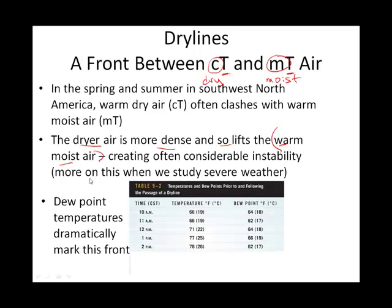You can tell that a dry line has passed by looking at dew point temperatures, which gauge humidity. For example, a dew point of 62°F can drop to 46°F after the passage of a dry line — over the course of just an hour. Thunderstorm chasers love dry lines for the severe weather potential they create.